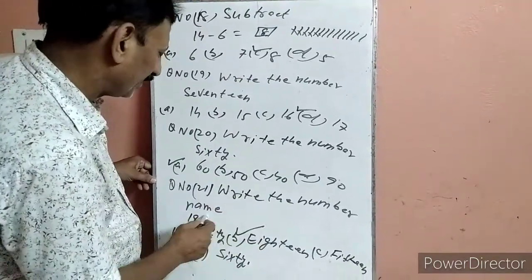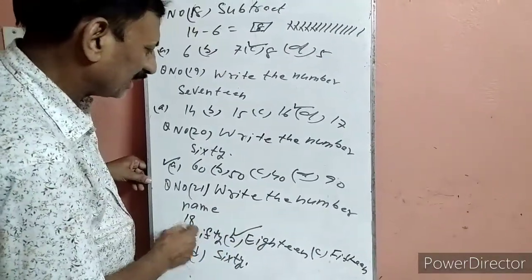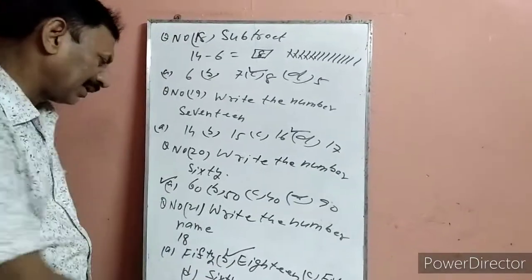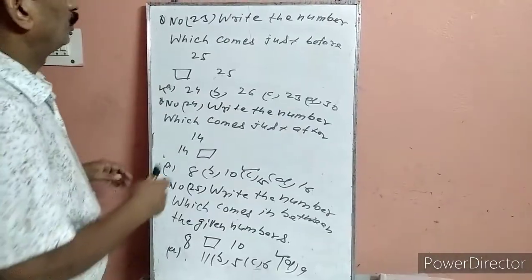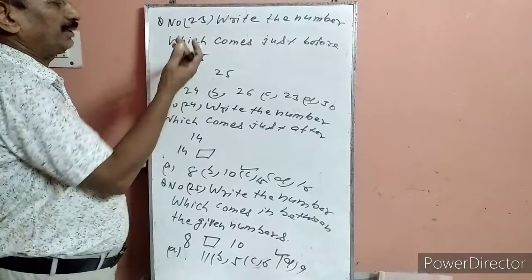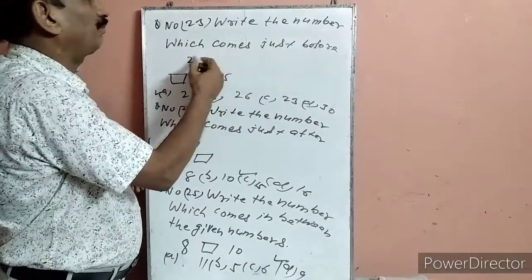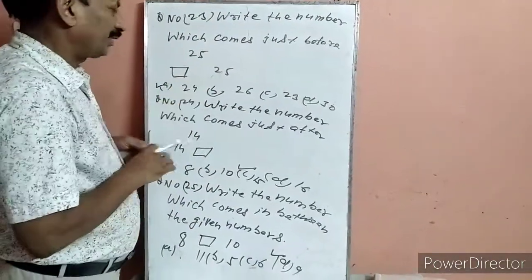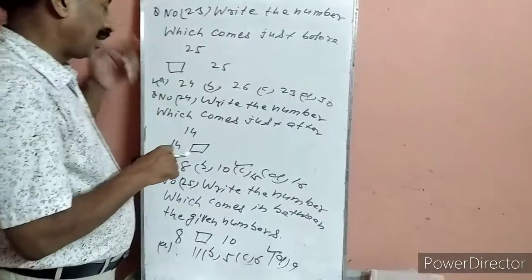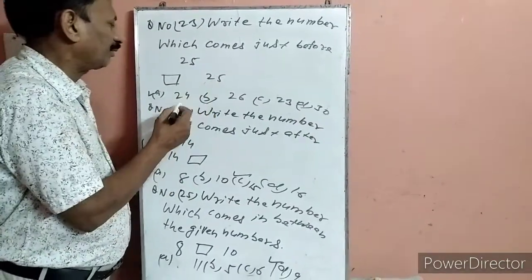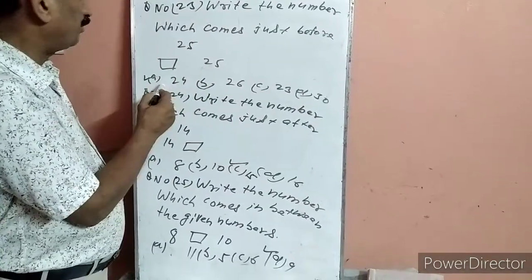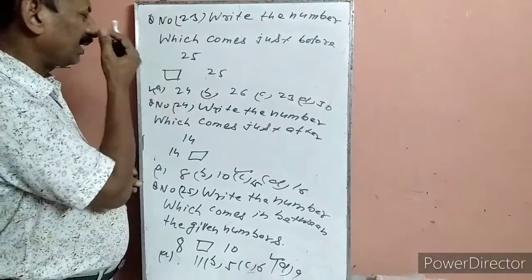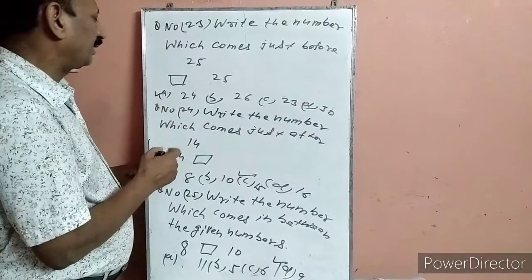Question 21: Write the number name — 18. 18 का number name B option पर है. B पर हमने टिक लगा दिया. Question 23: Write the number which comes just before 25. 25 के तुरत पहले 24 था. A पर 24 option है, हमने A पर टिक लगा दिया.